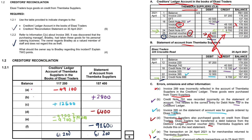Now let's look at question 1.2.2, which refers to information C about invoice number 395. Invoice 395 appears on the statement on the 22nd. It was discovered that the purchasing manager, Bradley, had taken these goods for his personal use. Bradley went out and placed an order in the business's name for 12,500, and when the goods arrived he took possession of them. There is no corresponding 12,500 entry on the debit side because Bradley did not want to enter anything in the ledger account.